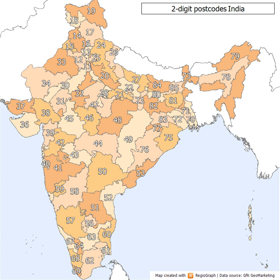The fourth digit represents the route on which a delivery office is located in the sorting district. This is zero for offices in the core area of the sorting district.